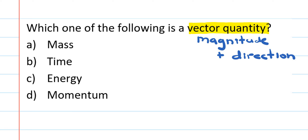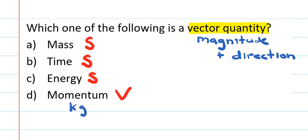Here are a few quick multiple choice questions to start the momentum chapter. The first question asks: which of the following is a vector quantity? Vectors have both magnitude and direction. Mass is a scalar, time is a scalar, energy is also a scalar, but momentum is a vector — it has both magnitude and direction. The units for momentum are kilograms times meters per second. So D is our first answer.